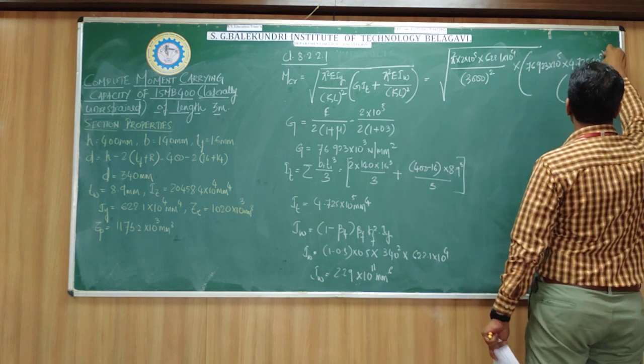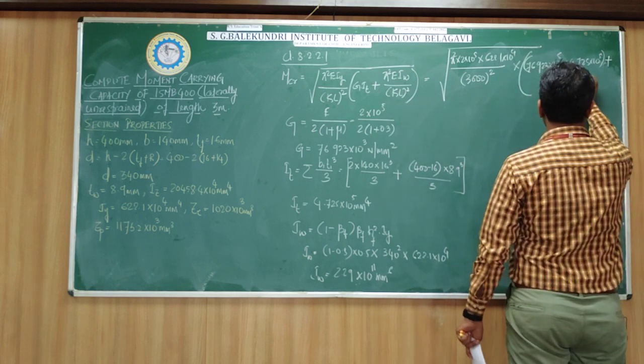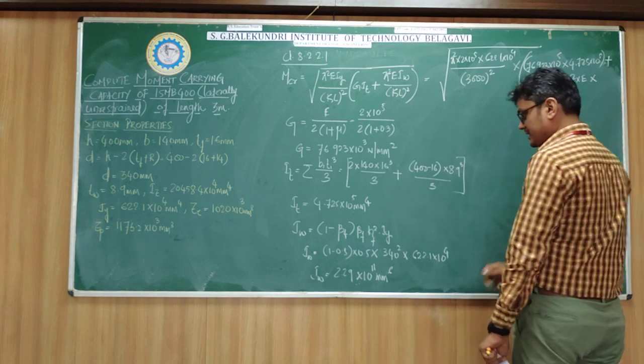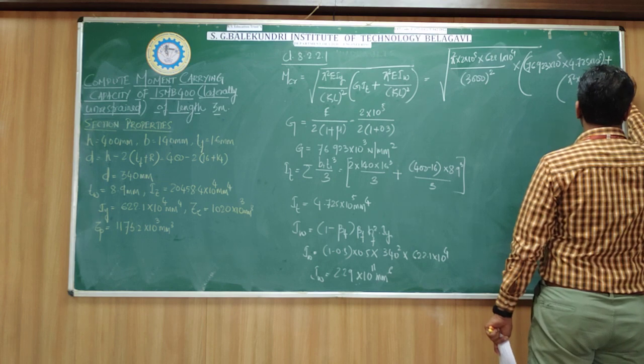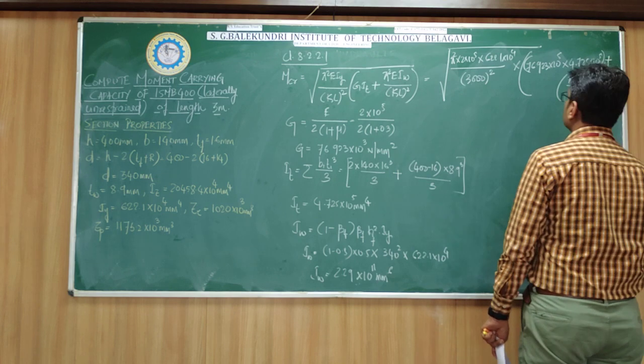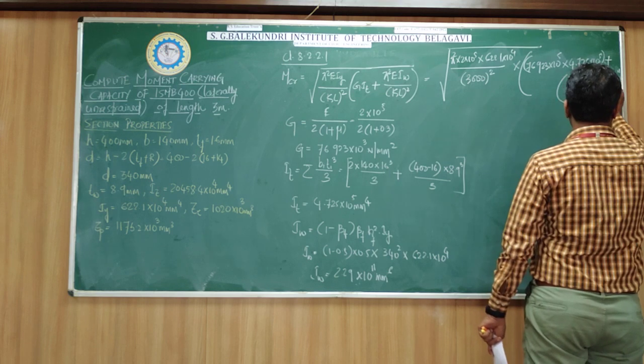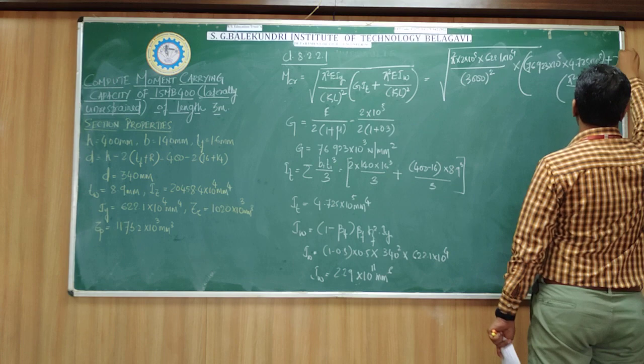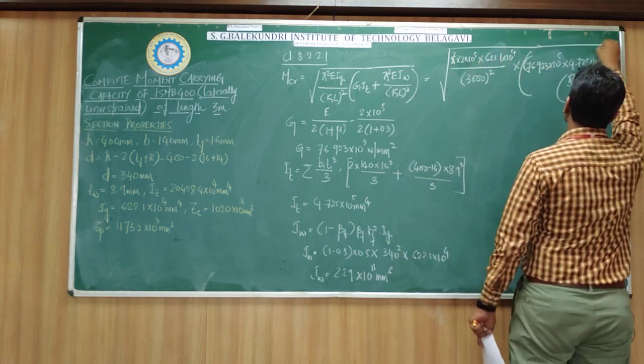Plus π²E × Iw, that is 2.29×10¹¹, this whole thing divided by KL squared. This whole thing is under square root.